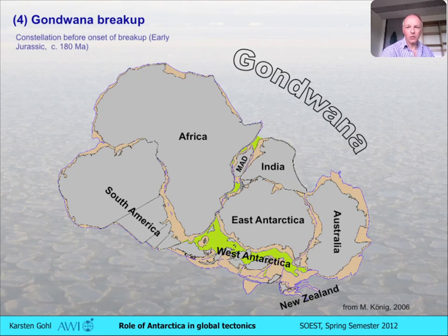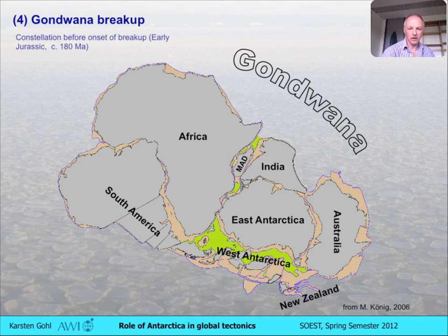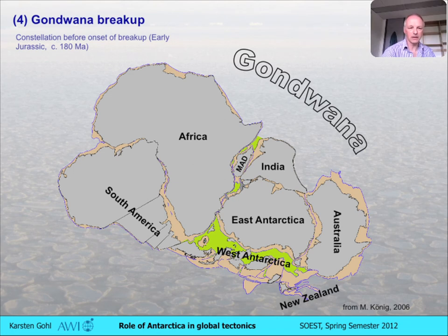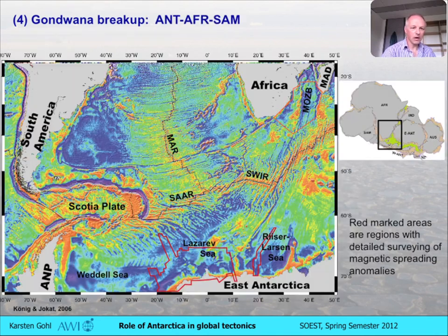We're going to walk around clockwise from a breakup between Antarctica–Africa, Antarctica–India, Antarctica–Australia, and then New Zealand. You're going to see this Gondwana map appearing on a couple of the upcoming slides as an inset, so you know where we are when we go on this breakup tour.